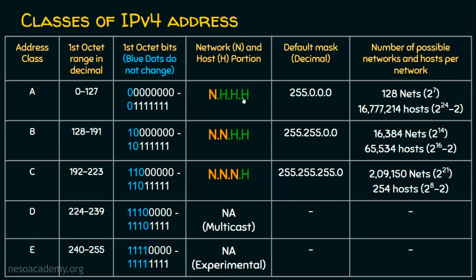IP addresses contain two important parts: the network portion and the host portion. Without the subnet mask, we can't say which is the network portion and which is the host portion. So every IP address is normally accompanied by the subnet mask. Let's take a class A example: 10.5.5.6. In this case, 10 is the network portion, and the remaining octets are the host portion. If the first octet matches for any different IP addresses, they belong to the same network.